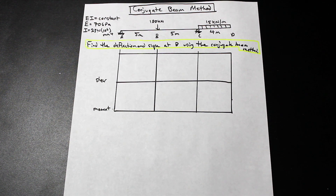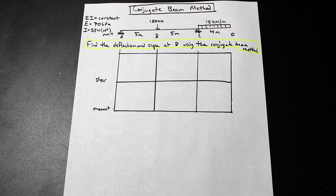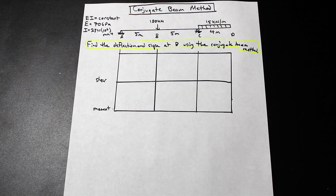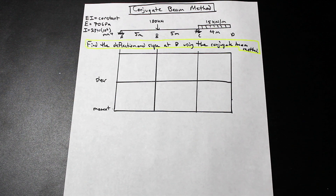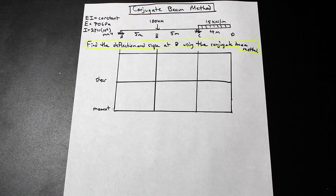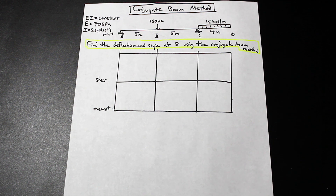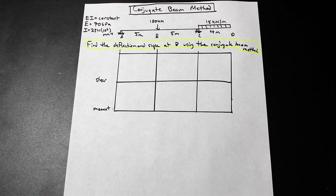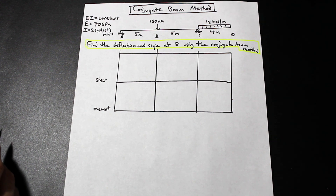The first step in the conjugate beam method is to solve the moment diagram, because we need to construct the M/EI diagram. Once we determine the M/EI diagram, we place it on the conjugate beam as a distributed loading, and then we can solve for deflection and slope of the real beam. I'll just give you the reactions for this one.